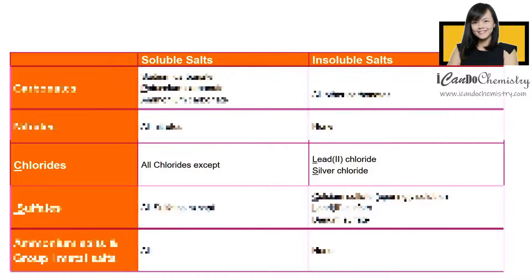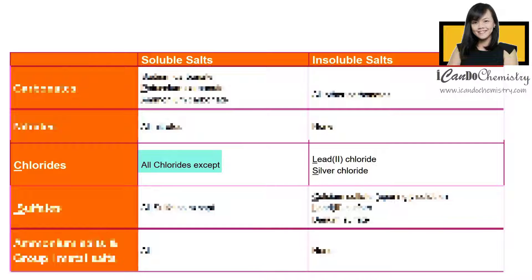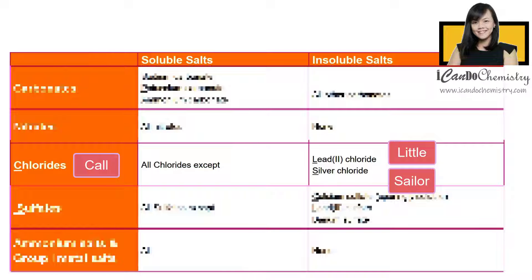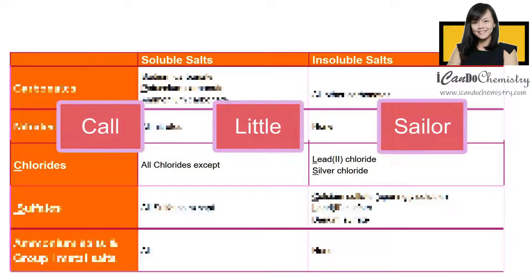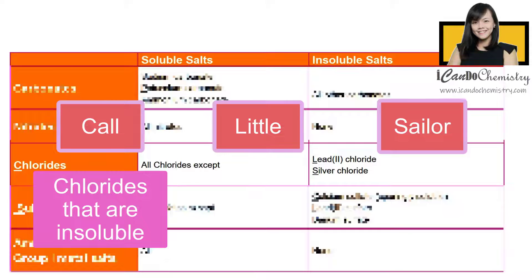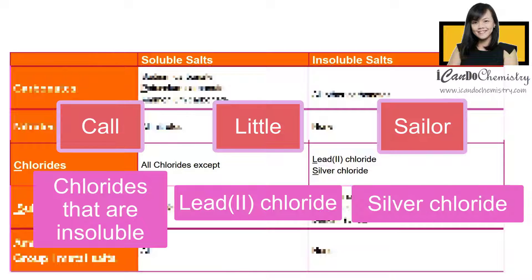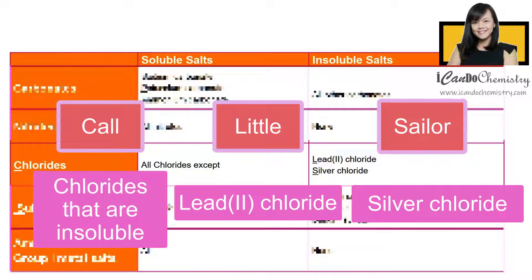For chlorides, all chloride salts are soluble in aqueous solution except lead 2 chloride and silver chloride. An easy way to remember is the mnemonic 'CLS': C stands for chloride, L stands for lead 2 chloride, and S stands for silver chloride. So you can remember that the insoluble chlorides are lead 2 chloride and silver chloride.